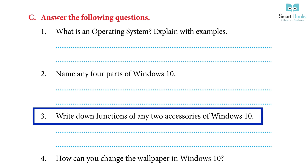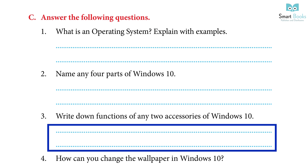Question 3: Write down the functions of any two accessories of Windows 10. Answer: A. Calculator — the calculator is an app that performs arithmetic calculations such as addition, subtraction, and scientific calculations. B. Notepad — Notepad is a basic text editing tool developed by Microsoft Windows. It allows us to create, edit, and print a document. We can also save a file in the Notepad app.